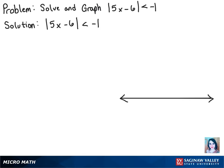Alright, so the first thing we want to take notice of here is the negative 1. This is telling us that the absolute value of 5x minus 6 is less than negative 1.